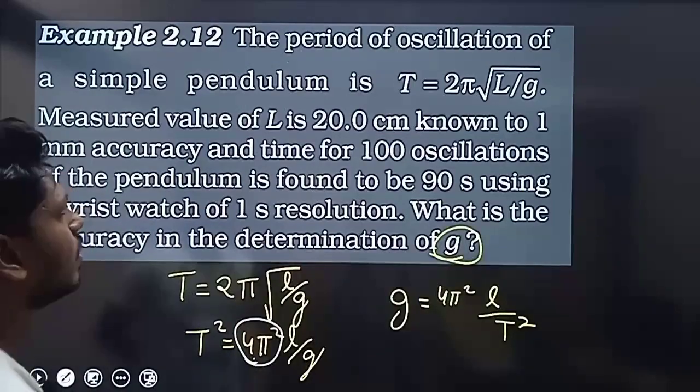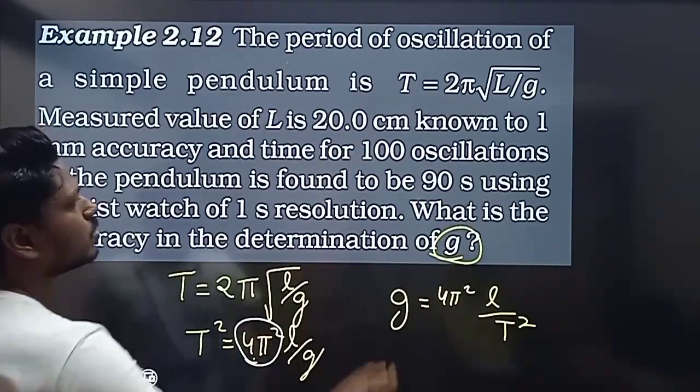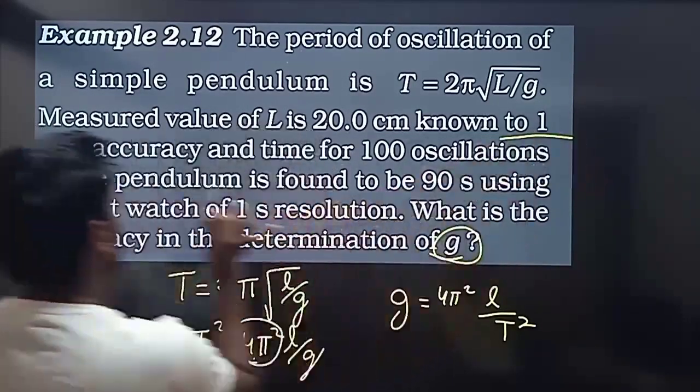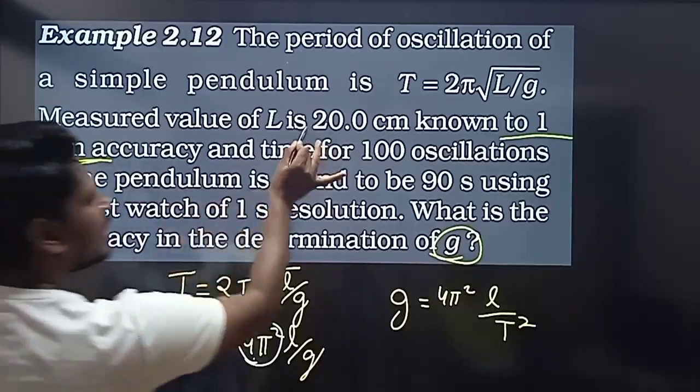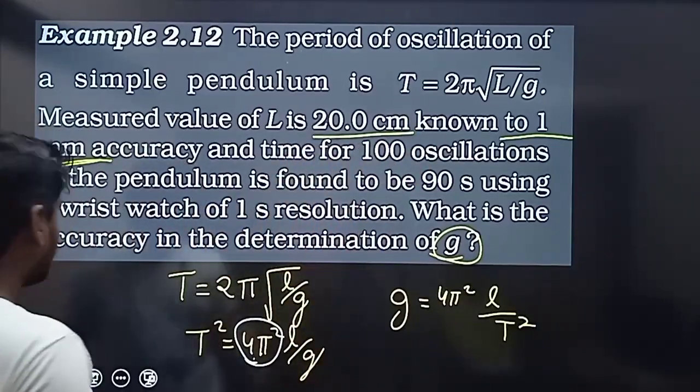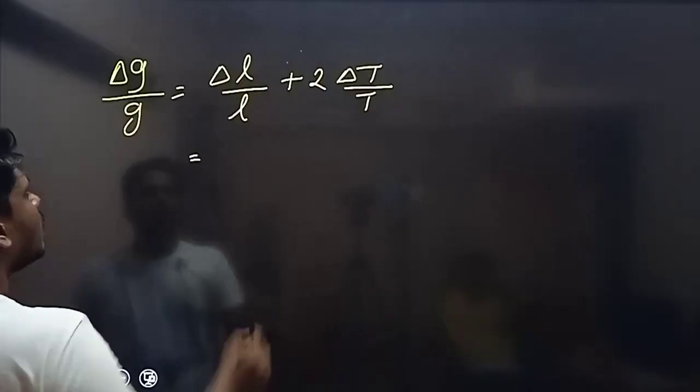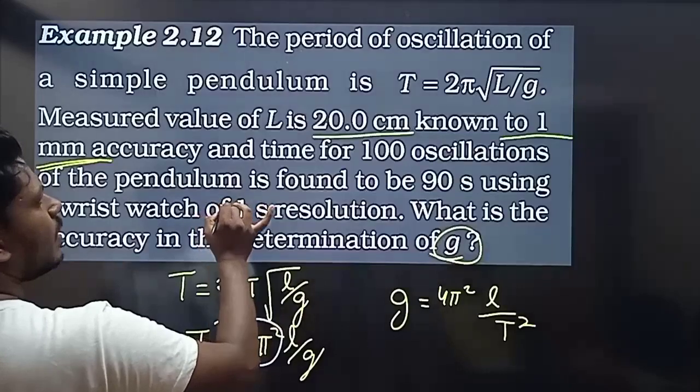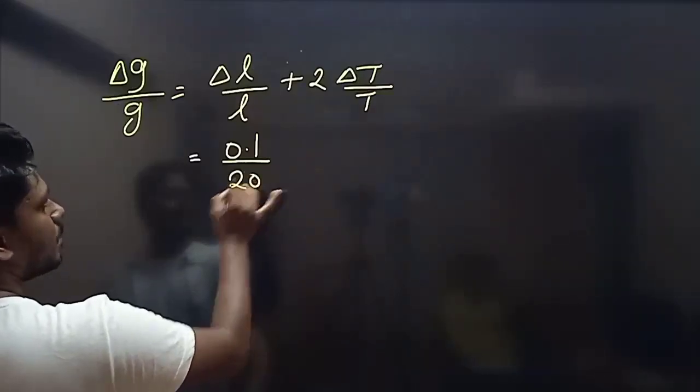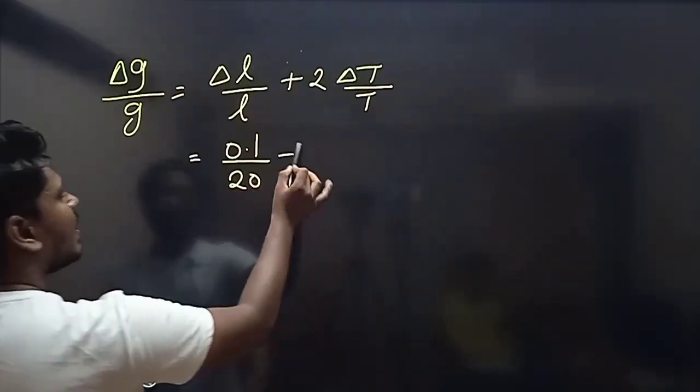The error in length is 1 millimeter, which is 0.1 cm. L is 20 cm. So ΔL by L equals 0.1 divided by 20. Plus...